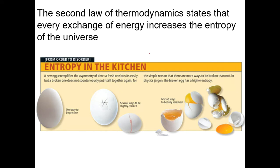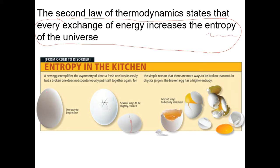The Second Law of Thermodynamics states that every exchange of energy increases the entropy of the universe. Entropy is the disorder of the universe — think of a perfect egg as highly ordered with low entropy. There's only one way to be a perfect egg, but a million different ways it could be broken, so a broken egg has high entropy.